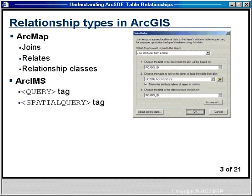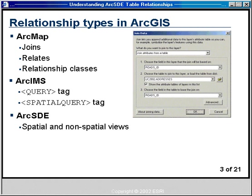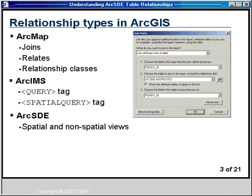We can also use ArcIMS to create associations between tables using the query and spatial query tags in ArcIMS AXL or map configuration files. We can also build relationships between ArcSDE tables and feature classes by creating ArcSDE spatial and non-spatial views. All relationships mentioned can be applied to non-ArcSDE data, except for ArcSDE spatial and non-spatial views. For today, we'll mainly be discussing ArcSDE data.